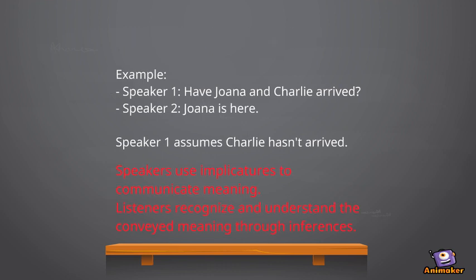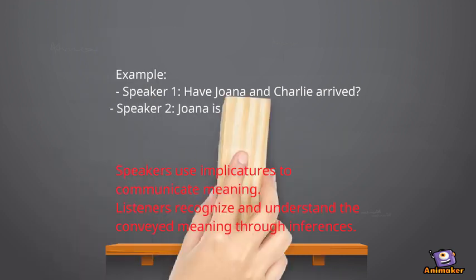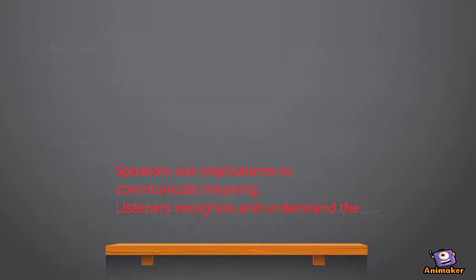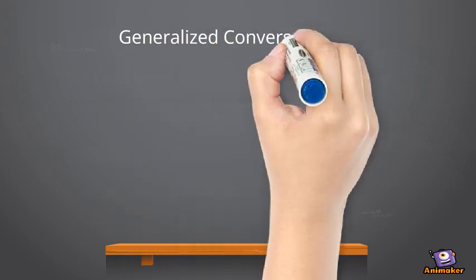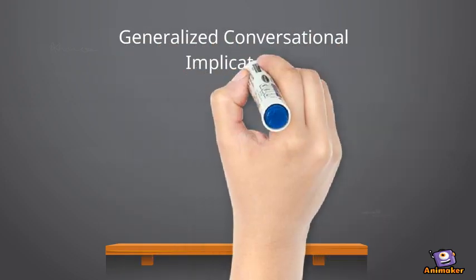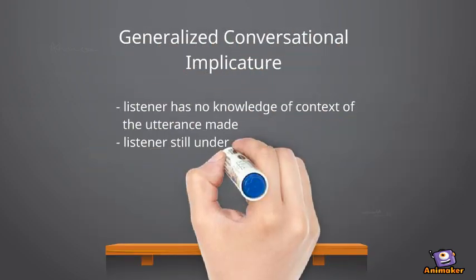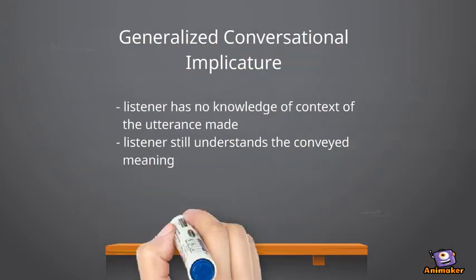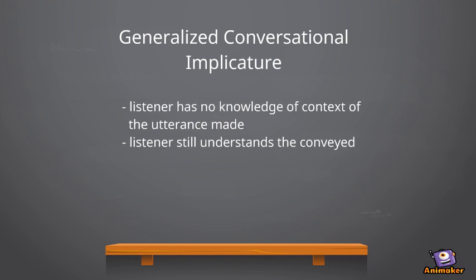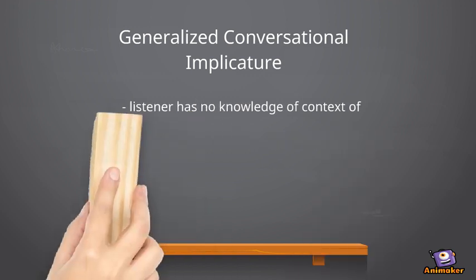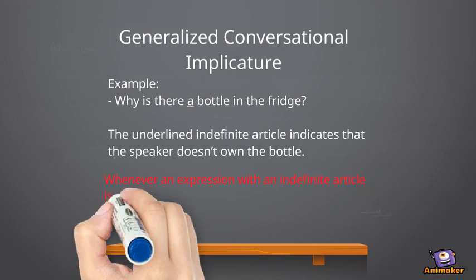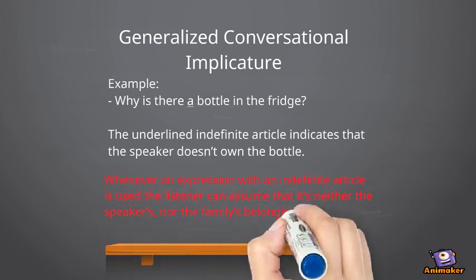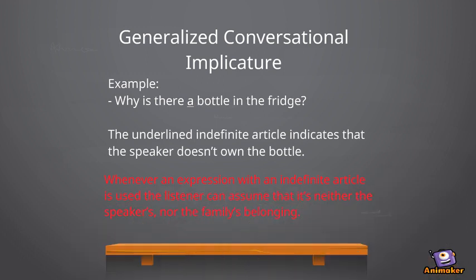If the listener doesn't have knowledge of the context of an utterance but they still understand the conveyed meaning, the speaker may have used generalized conversational implicature. The underlined indefinite article indicates that the speaker doesn't own the bottle. Whenever an expression with an indefinite article is used, the listener can assume that it's neither the speaker's nor the family's belonging.